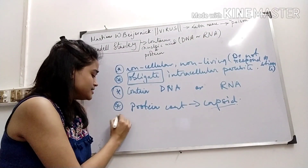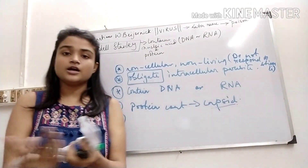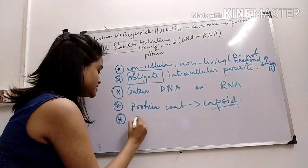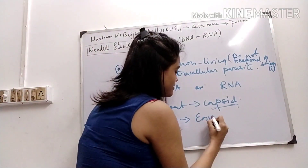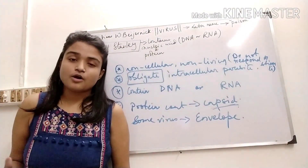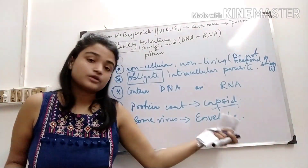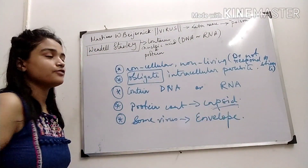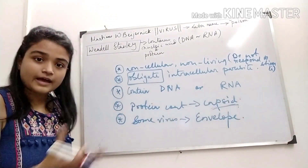Some viruses may have an envelope — another covering which protects the capsid. This envelope is made up of lipids, proteins, and carbohydrates — we can call it a lipoprotein envelope. It protects the capsid. An example of a virus which has an envelope is the influenza virus.